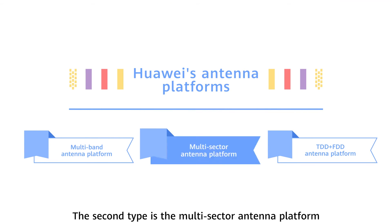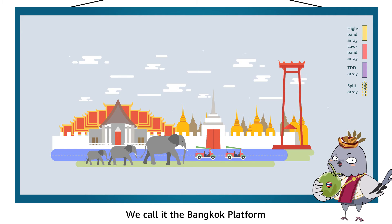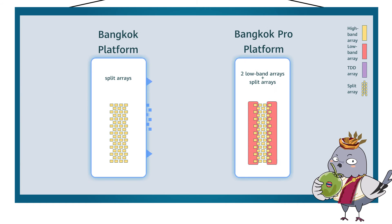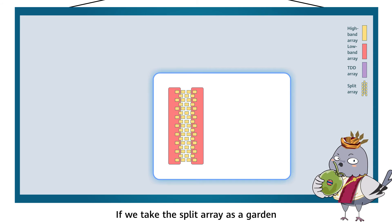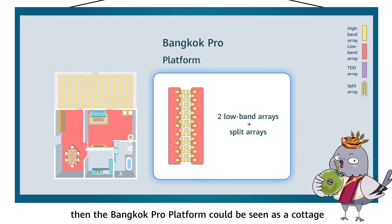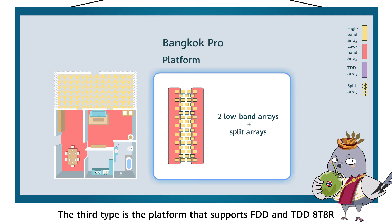The second type is the multi-sector antenna platform. We call it the Bangkok platform because Thailand has the world's largest multi-sector network. If we take the split array as a garden, the Bangkok Pro platform can be seen as a cottage with two living rooms and a garden.